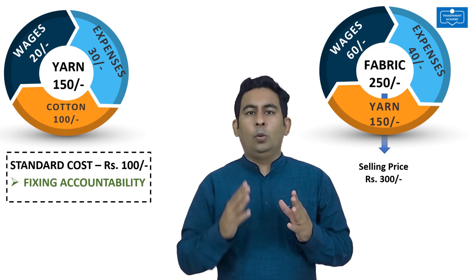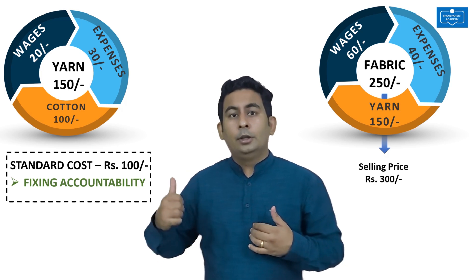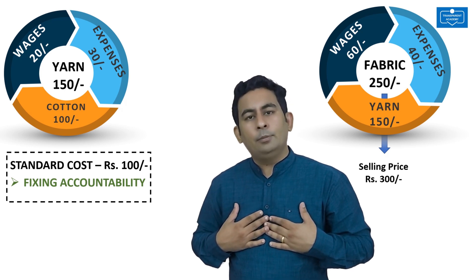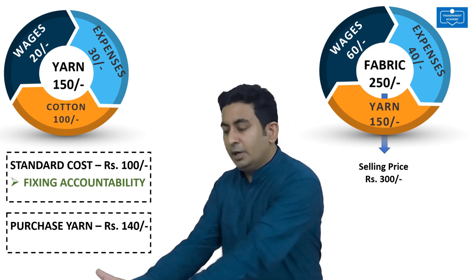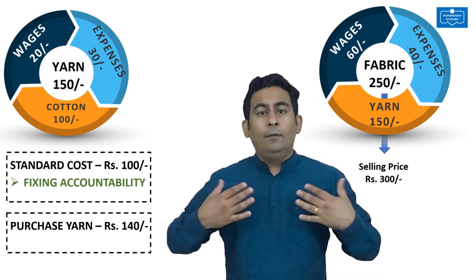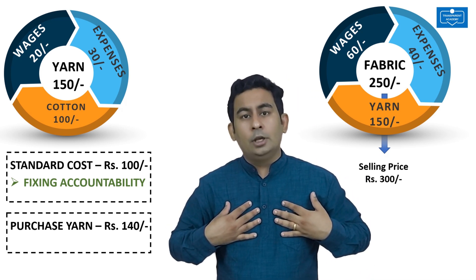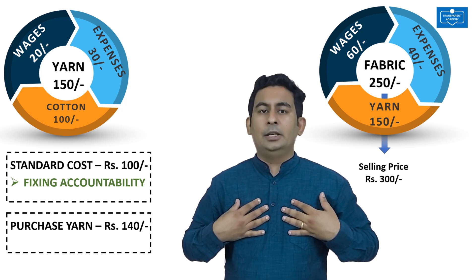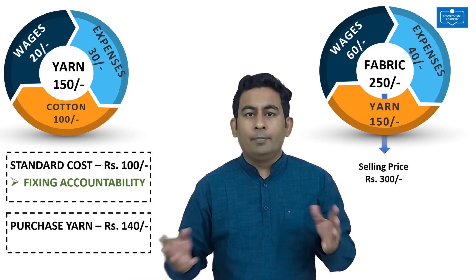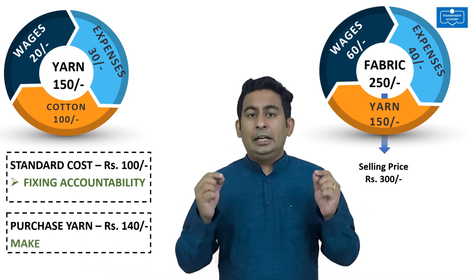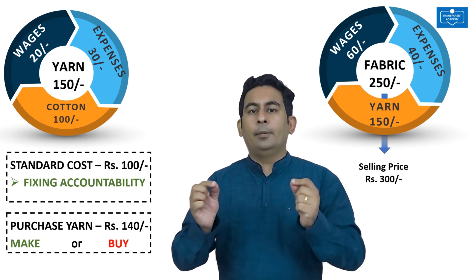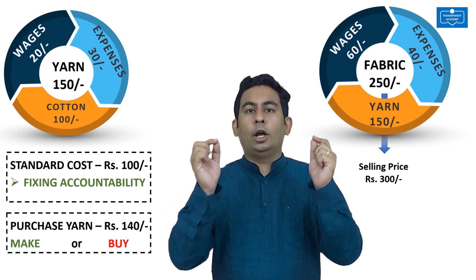Moving on to the second advantage, consider this scenario. The cost of manufacturing 1 unit of yarn is 150 rupees. The management comes to know that the same quality of yarn can be purchased from the open market for just 140 rupees. Will they want to make it themselves for 150 rupees or buy it from the open market for 140 rupees? The answer is obvious — they will buy it from the open market for 140 rupees. That is the second advantage of process costing: it helps you in taking a make or buy decision, whether to make the yarn themselves or to buy it from the open market.